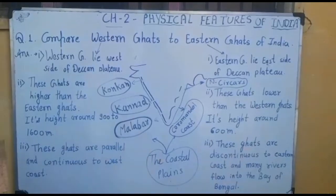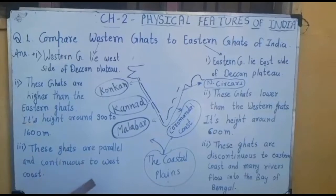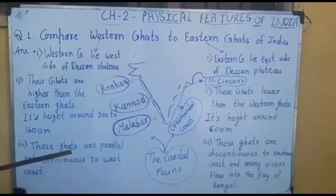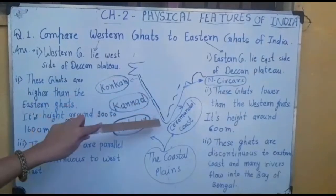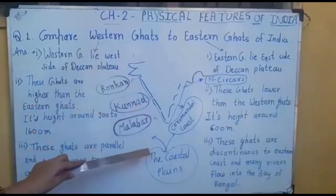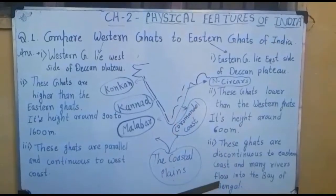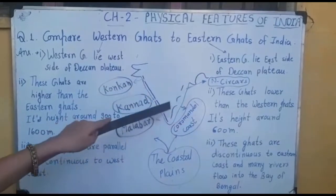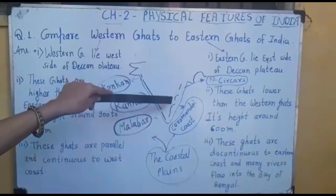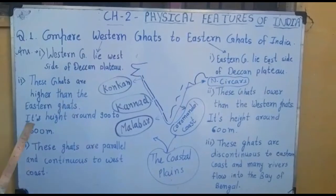There is also a difference in height. The next point is that Western Ghats are parallel and continuous — there are no gaps, they run parallel and continuous along the western coast. But Eastern Ghats are not continuous; they are discontinuous along the eastern coast, and many rivers flow into the Bay of Bengal from this side. You can see on the map that Western Ghats have no gaps, whereas Eastern Ghats have many gaps and are discontinuous.